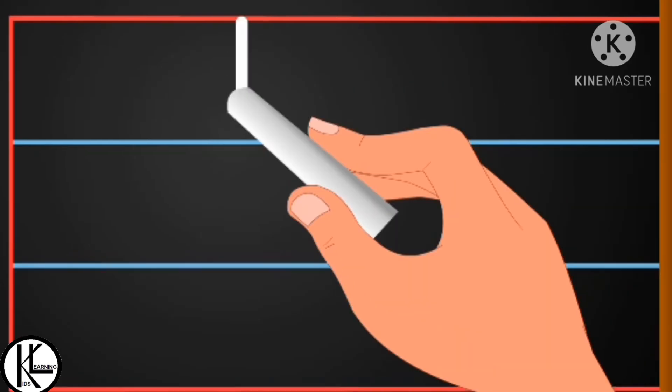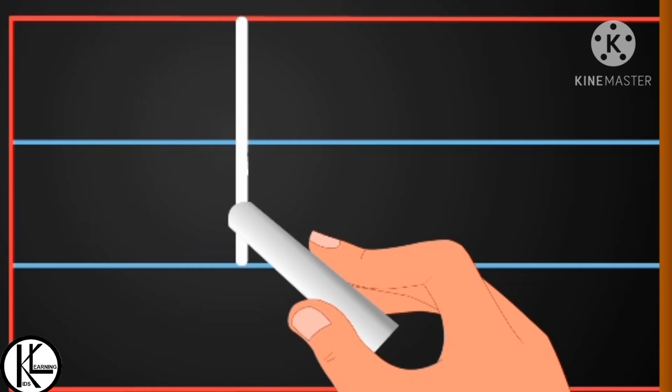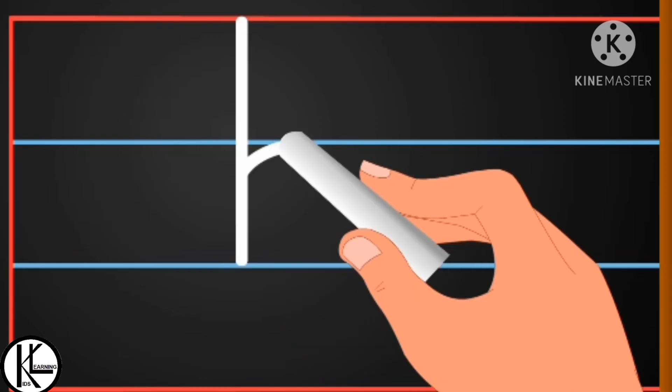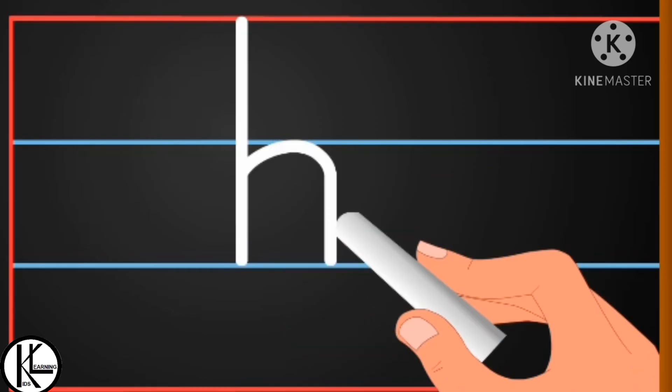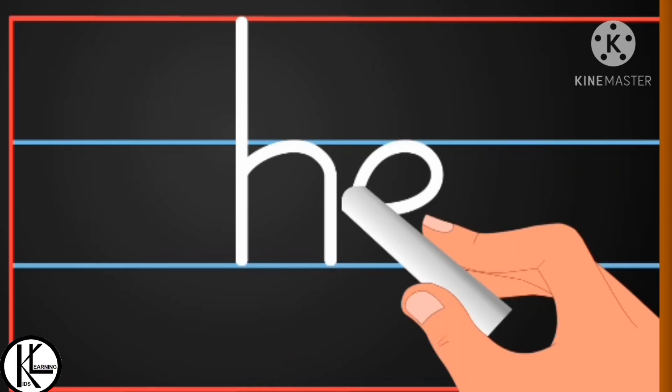Write letter H, and then letter E: H, E, He. Write while reading children: letter H and then letter E. H, E, He.